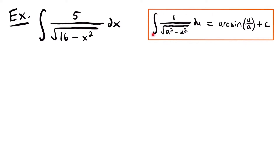The integral rule says that if we have the integral of 1 divided by the square root of a squared minus u squared du, where a is a constant and u is a function of x, that is equal to arc sine of u divided by a plus c.